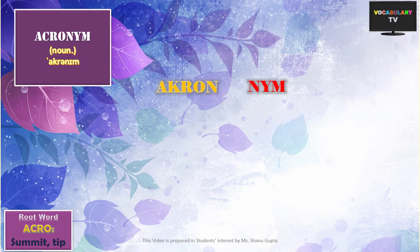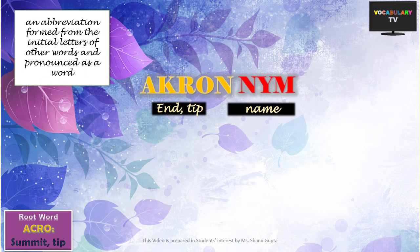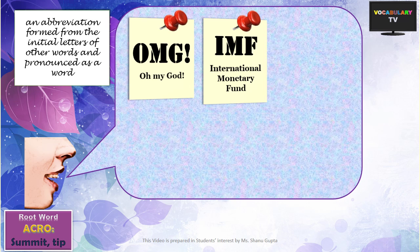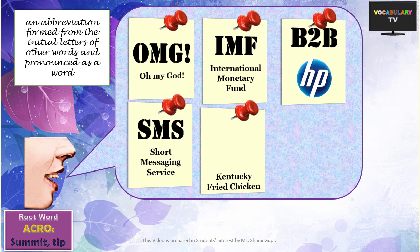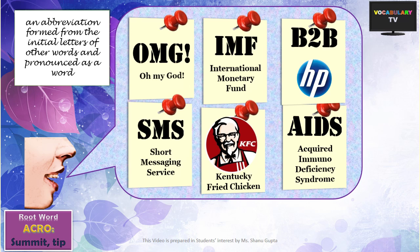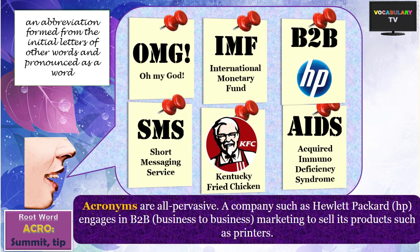One of the most interesting words based on this root is ACRONYM. An acronym is formed by picking the tip — or the first letters — of each word that comprises a long name. From expressions like OMG, to telephone services such as SMS (Short Messaging Service), to international organizations such as IMF (International Monetary Fund), corporations such as KFC (Kentucky Fried Chicken) and HP, processes like B2B, and diseases like AIDS — you will find acronyms everywhere; they are all-pervasive. For example: a company such as HP, an acronym for Hewlett Packard, engages in B2B (business-to-business) marketing to sell its products such as printers.